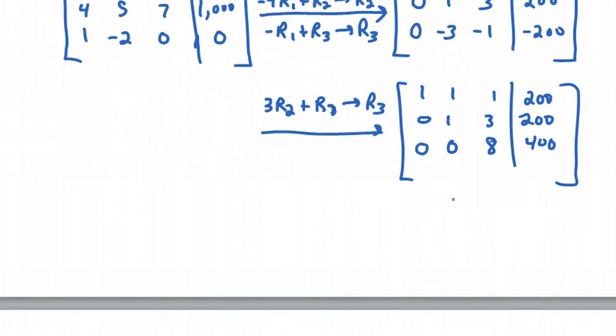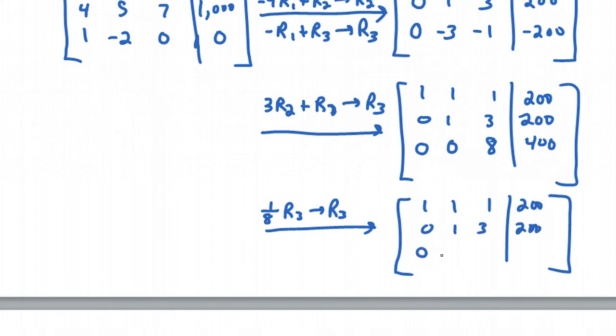Now last of all, we want to get a 1 right here in this corner. So how do we get a 1 there? We're going to divide that row by 8. Or in other words, we're going to multiply it by 1 eighth. We're going to do 1 eighth of row 3. That's going to give us a new row 3. The first two rows are not going to change. But we're going to divide every number in the third row by 8. These first two will stay 0, this will be 1, and then 400 divided by 8 is 50.